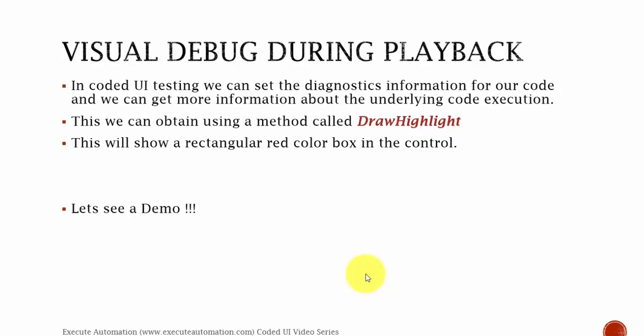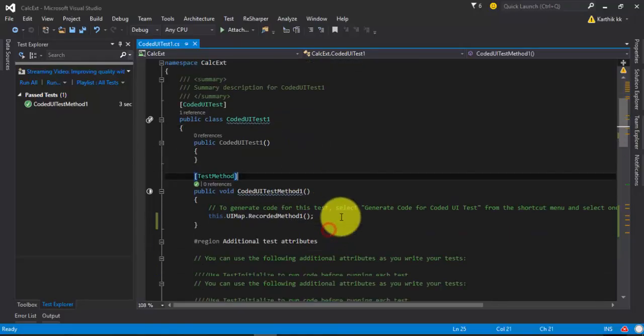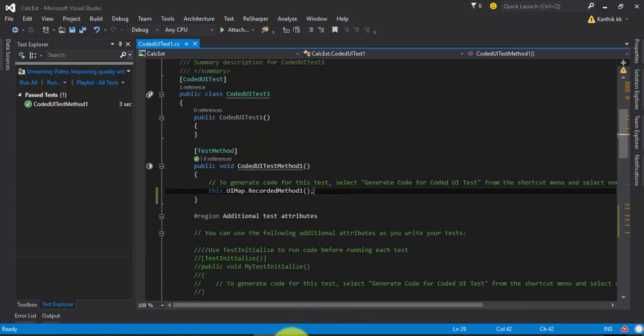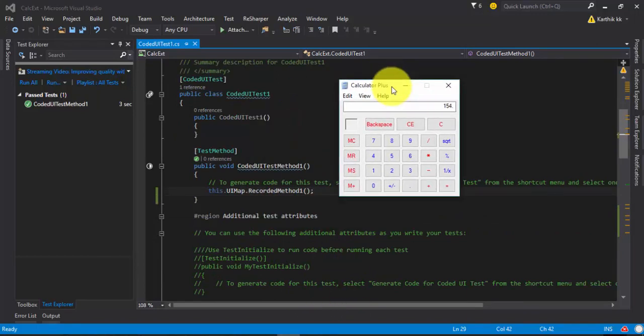In Coded UI testing we can set diagnostic information for our code and get more information about the underlying code execution. We can do this using a lot of ways, but the easiest way is the draw highlight method. This method will actually create a blue rectangle box in the control if you try to execute it.